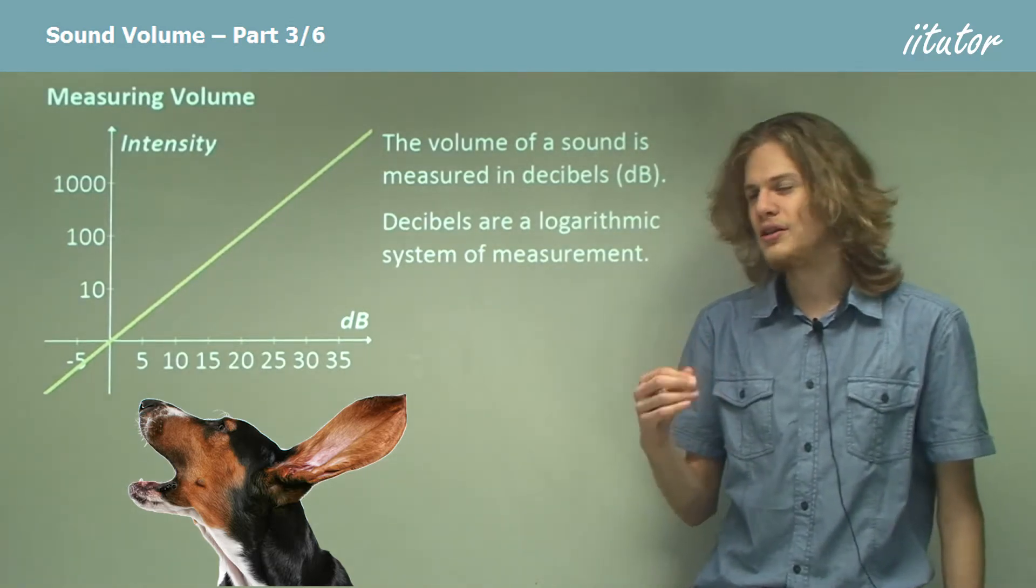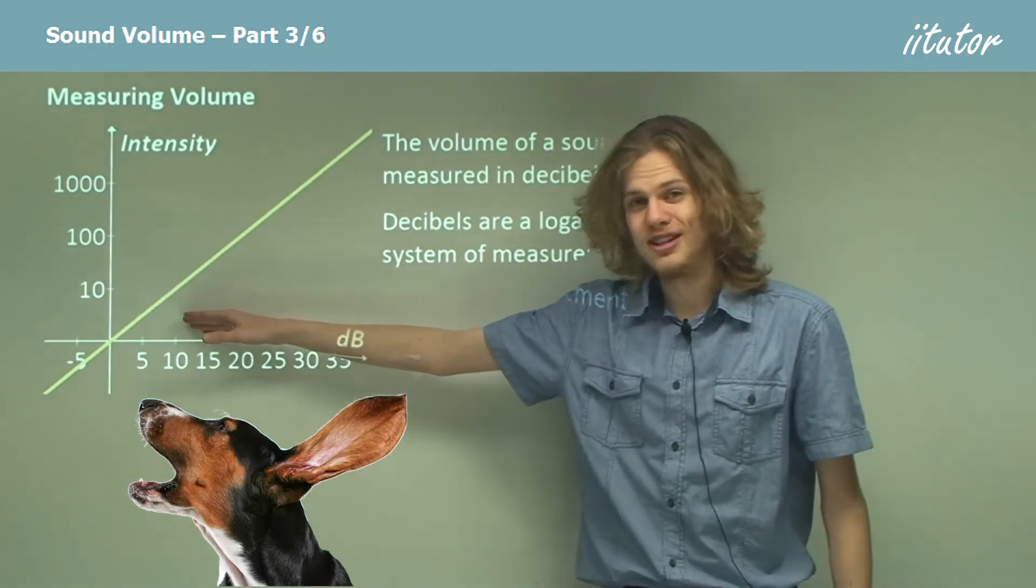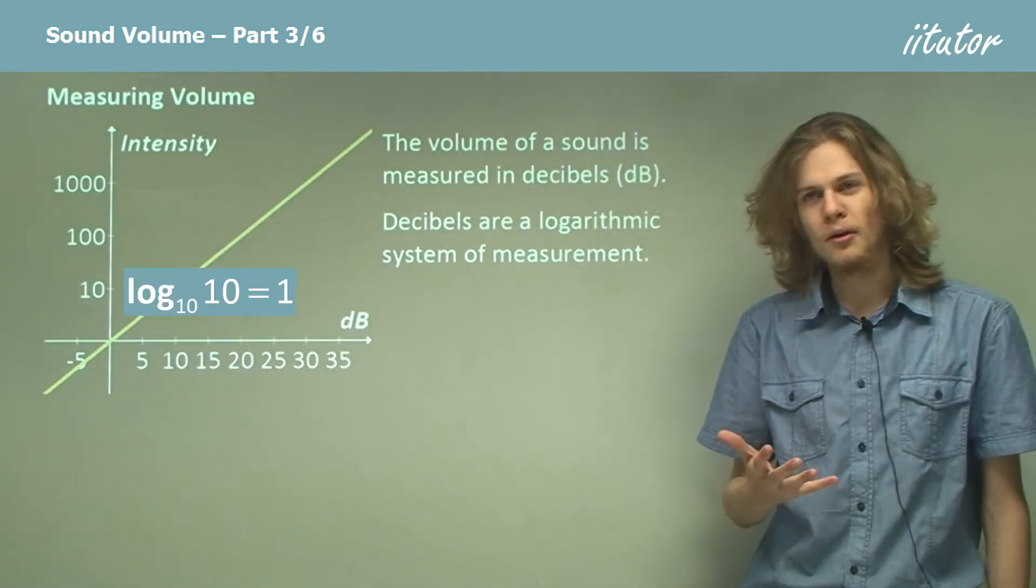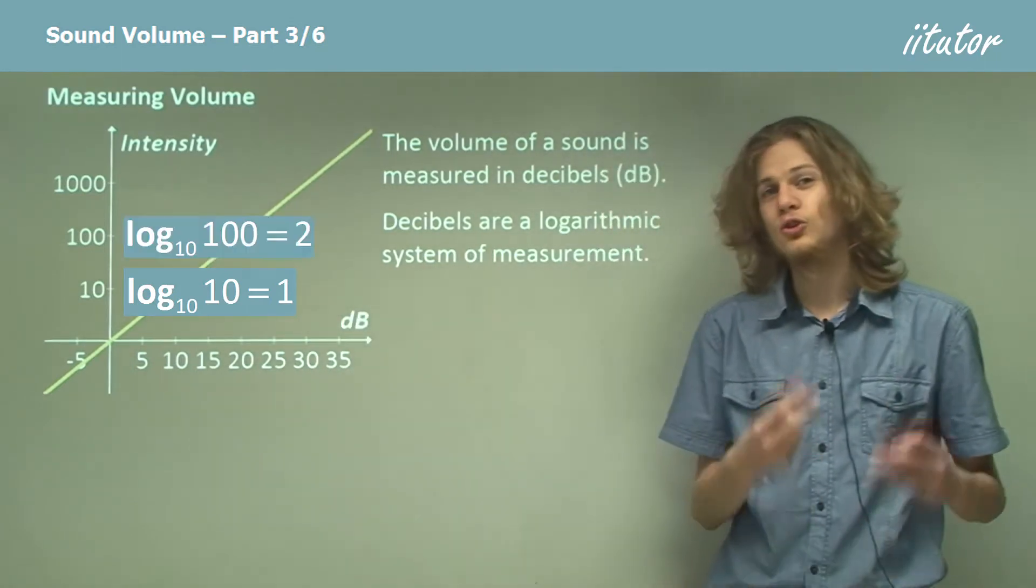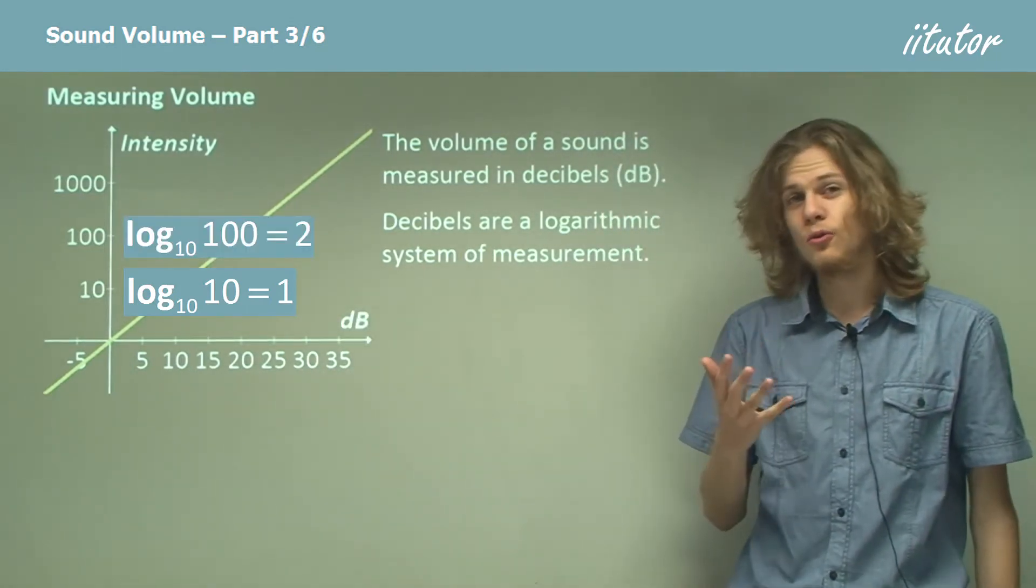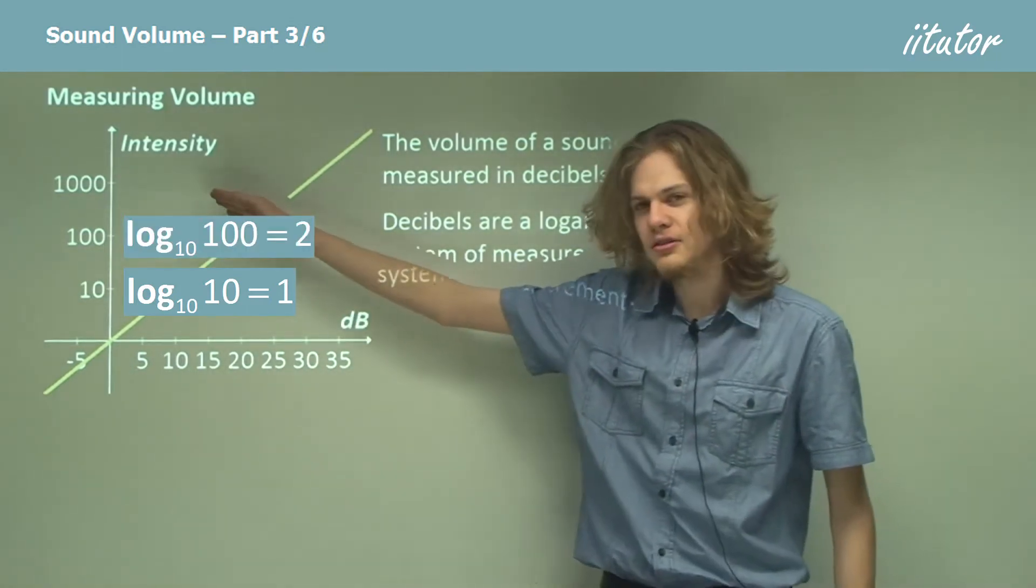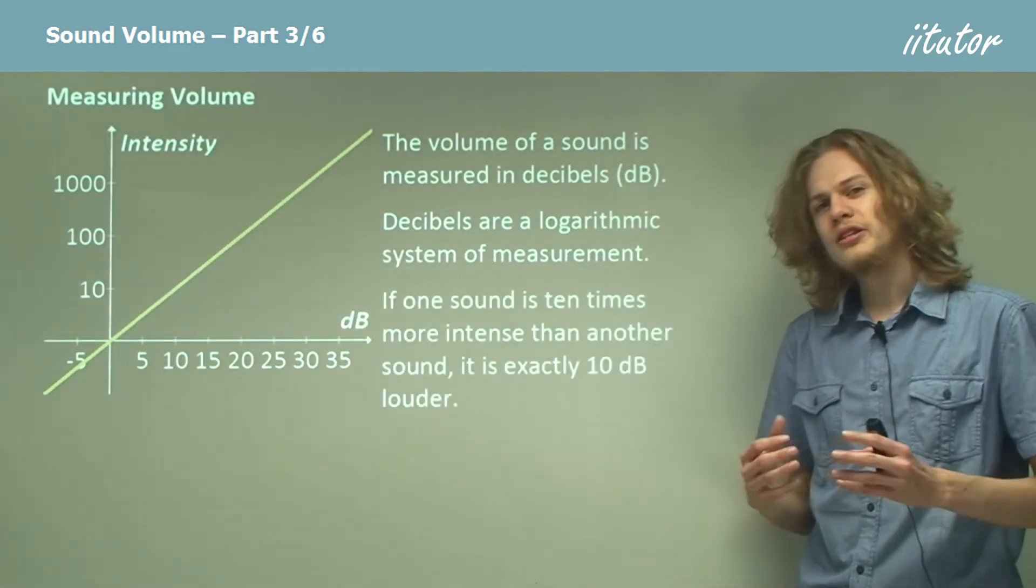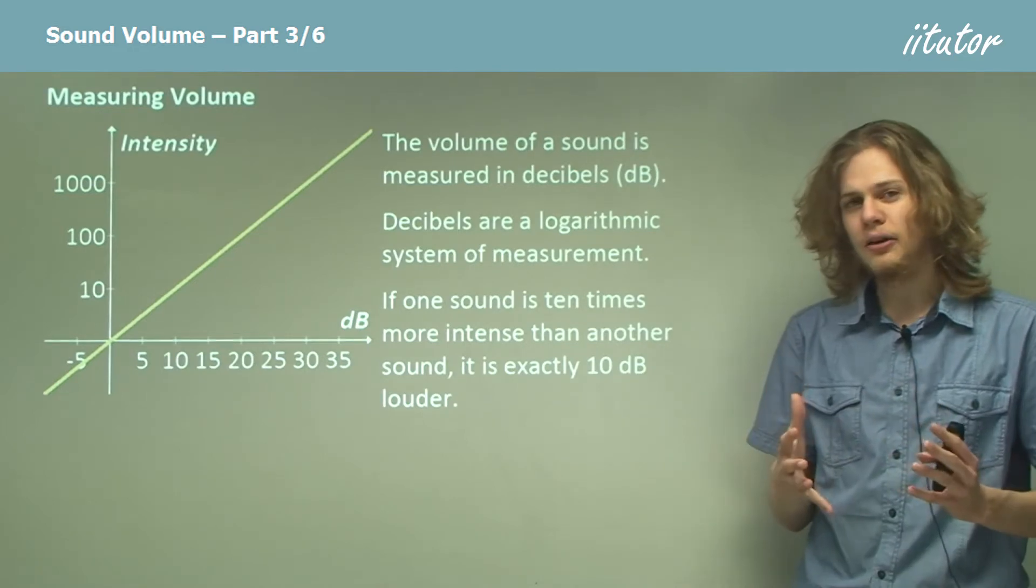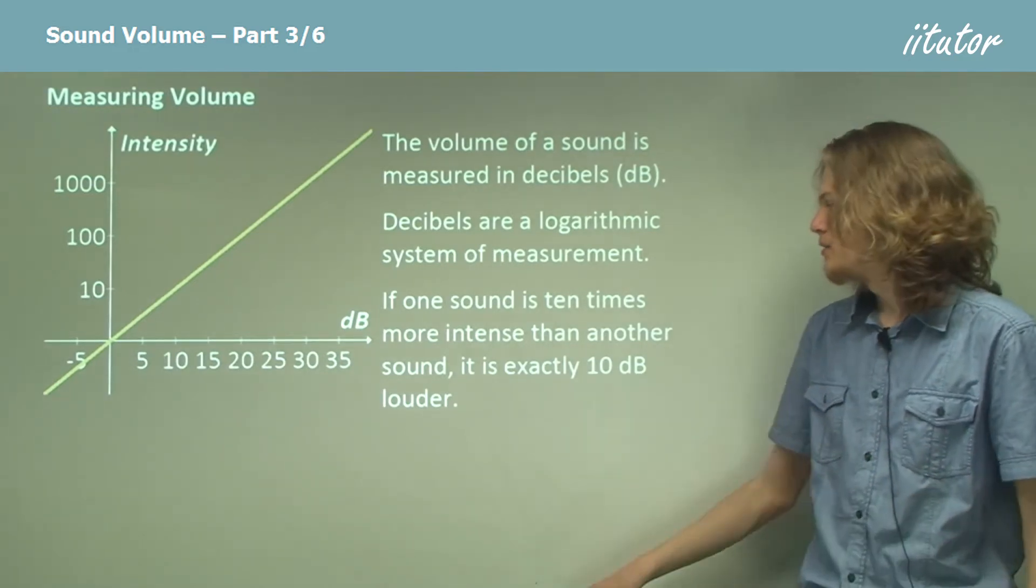Logarithms pertain to the different powers of numbers. So if we were to take the logarithm base 10 of the number 10, we'd get 1. If we were to take the logarithm base 10 of 100, we'd get 2. If we take the logarithm base 10 of a thousand, we get 3, and so on.